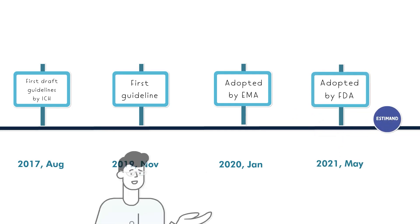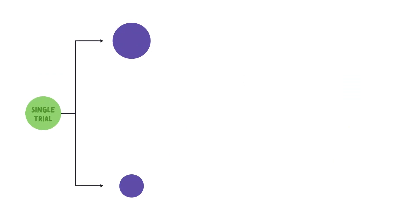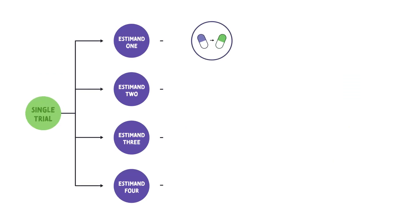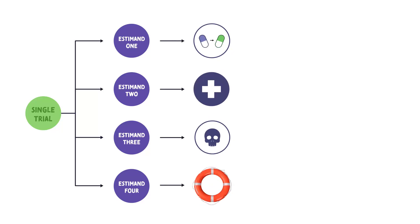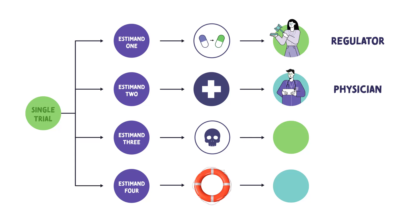Can you tell me more about estimands in practice? In fact, a single trial can have more than one estimand, each reflecting a different way of dealing with intercurrent events. This may help to address the needs of various stakeholders interested in the trial results, such as regulators, physicians, patients, or payers. It also allows assessment of the impact of intercurrent events on the results and generalizability of the trial findings.